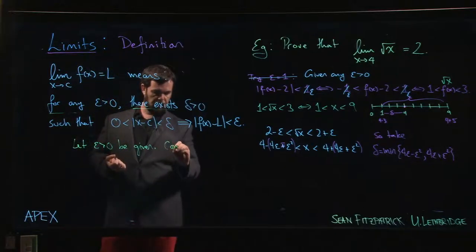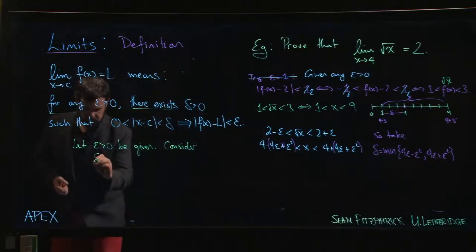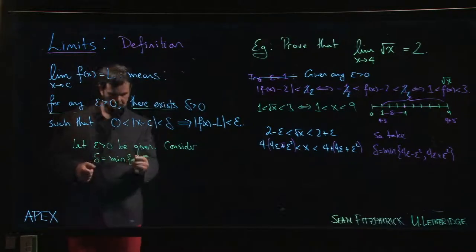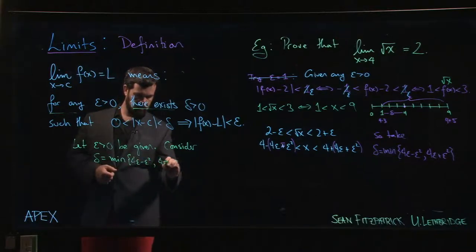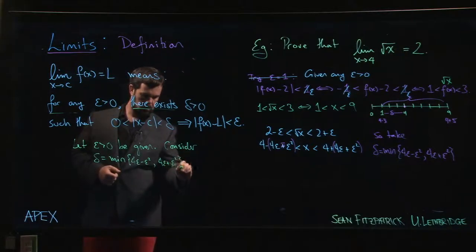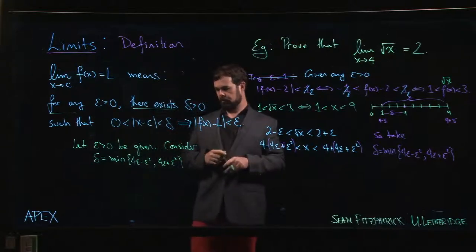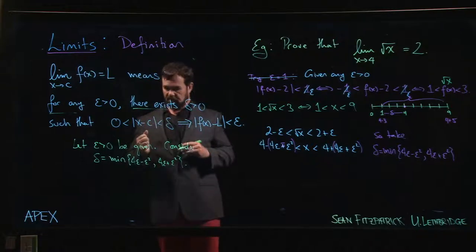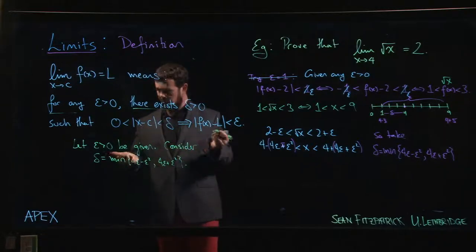Now what we're going to do is we're going to say, let's consider delta to be the minimum of 4 epsilon minus epsilon squared and 4 epsilon plus epsilon squared, whichever the two is smaller. So the idea of showing that this delta exists is, well, I say, here's one, and I'm going to show you it works. How do I show you it works?